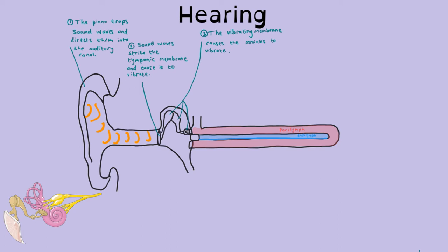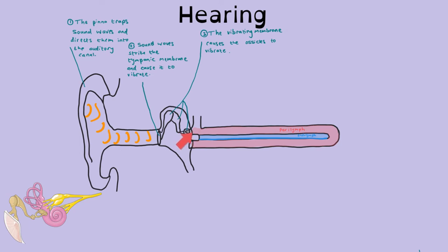The vibrating tympanic membrane causes the ossicles to vibrate. The stirrup, the last ossicle, is in direct contact with the oval window. Remember, O comes before R — the oval window is above the round window. When the stirrup is hitting on the membrane of the oval window, just on the other side is fluid in the cochlea. Remember, your inner ear is fluid-filled.